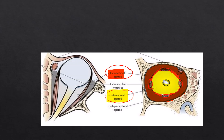The reason it is called a cone is that the recti originate posteriorly and travel forward, forming a conical shape. The superior rectus, inferior rectus, lateral rectus, and medial rectus together form this conical space called the intraconal space. The space outside that cone is the extraconal space, which basically consists of the fat in the orbit.